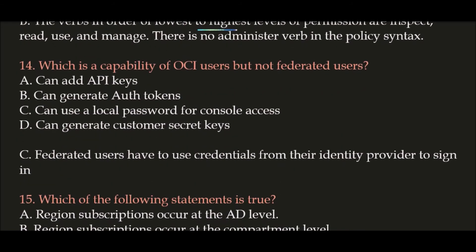Question 14: Which is a capability of OCI users but not federated users? Option A: Can add API keys, Option B: Can generate auth tokens, Option C: Can use a local password for console access, Option D: Can generate customer secret keys. The correct answer is Option C. Federated users have to use credentials from their identity provider to sign in to Oracle Cloud, but OCI users can use a local password for console access.